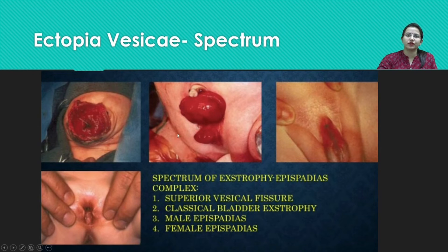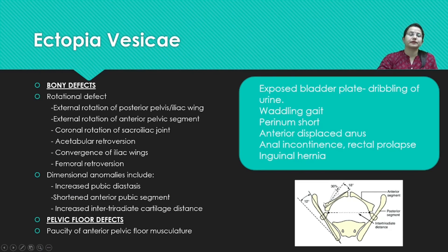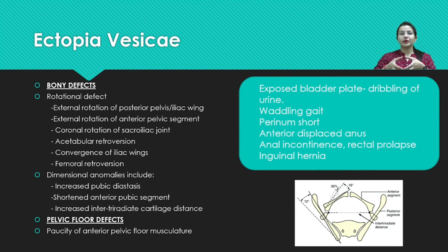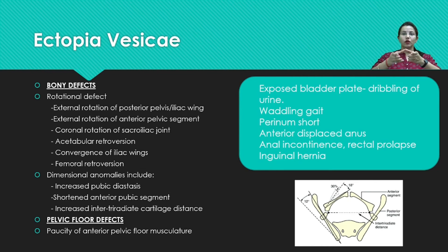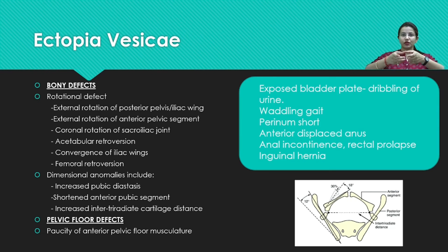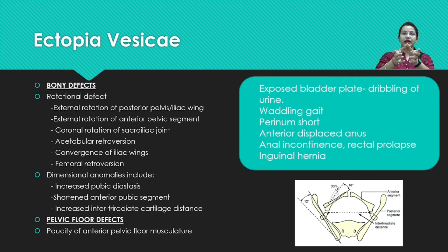A spectrum of ectopic vesica has been described: cleft fissure, where the genitalia is normal but the bladder is exposed; classical bladder exstrophy as described; male epispadias; and female epispadias. These patients have various bony and pelvic floor defects. The normal pelvis is closed, but in these cases it is open, with external rotation, pubic diastasis, a short anterior pubic segment, and retroversion of the acetabulum. The entire pelvic floor musculature is deficient or poorly developed.